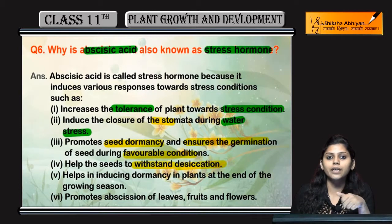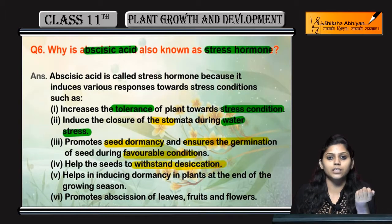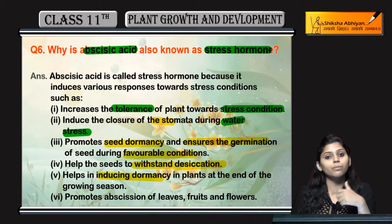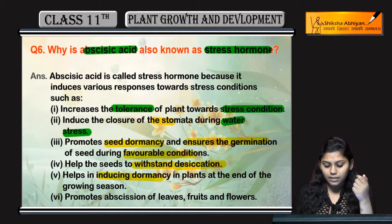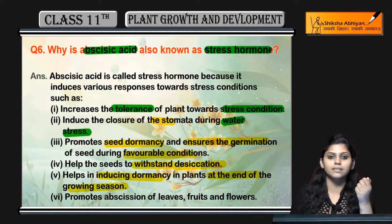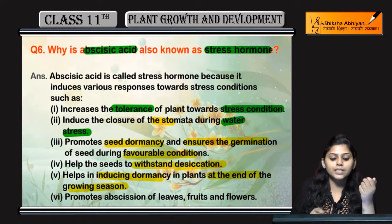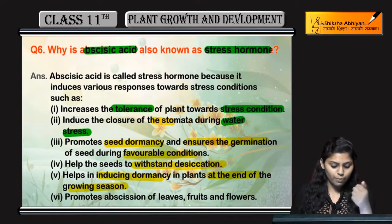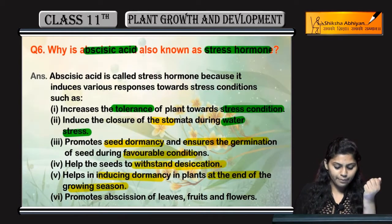Desiccation क्या होता है? Extreme dryness condition. Help करता है seeds को withstand करने के लिए desiccation में. Help करता है to induce dormancy in plants at the end of growing season — growing season के end में dormancy of plant को promote करता है.